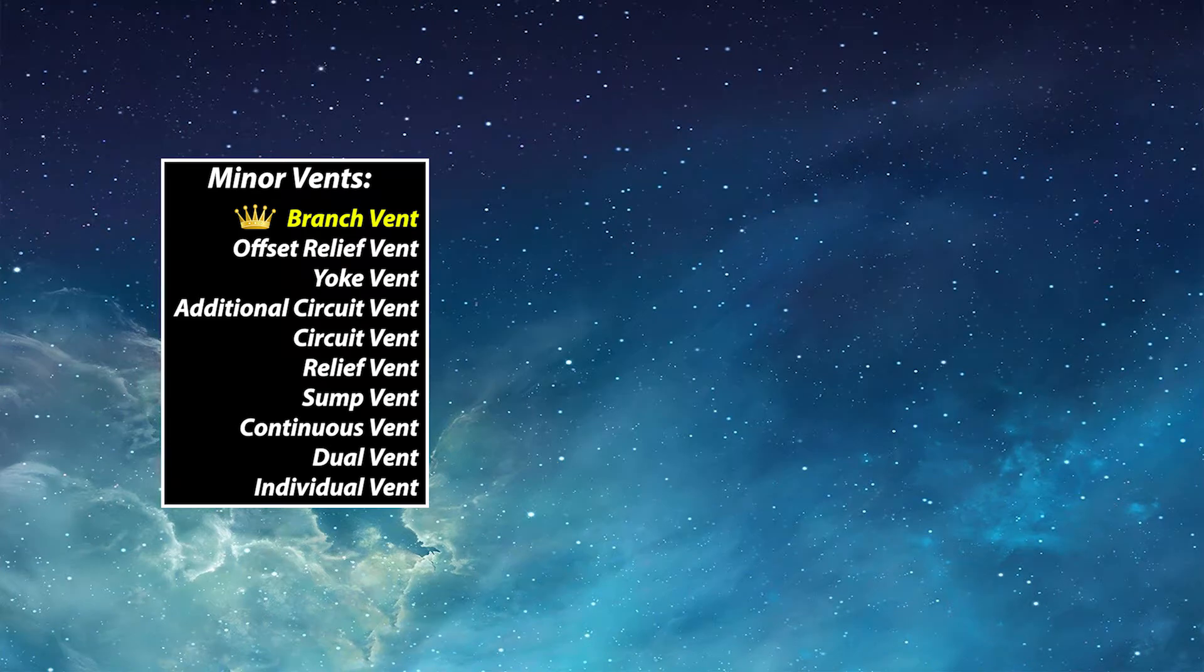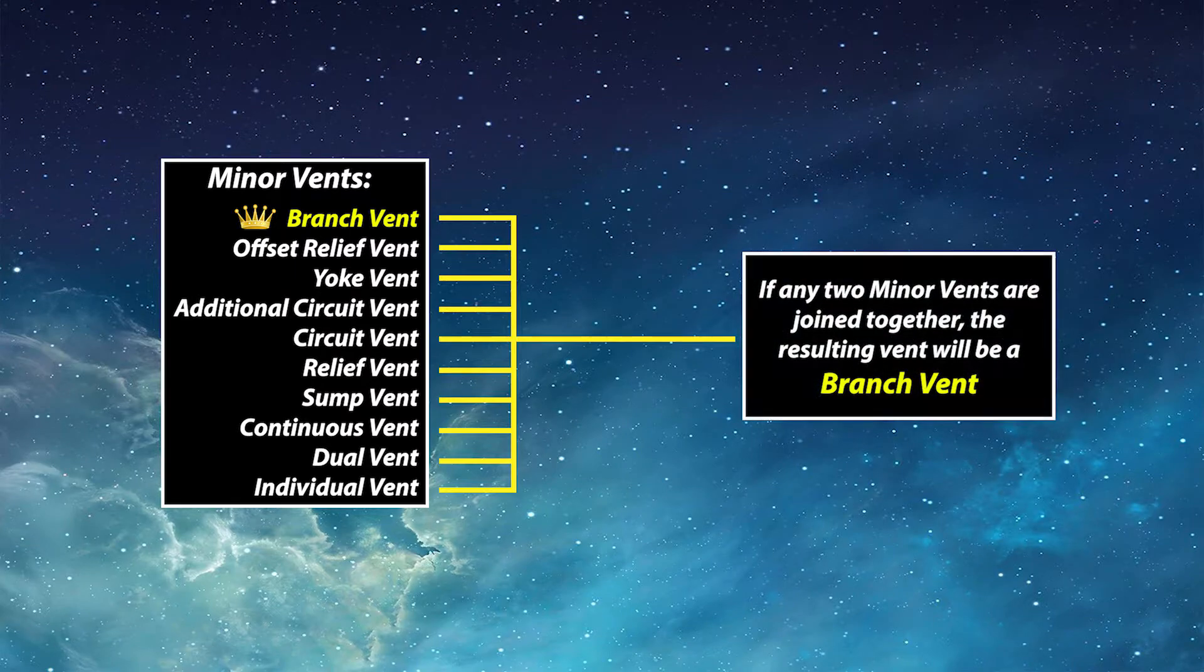Here is a list of minor vents. If you have not come across all of these, you will throughout your apprenticeship. Now notice how I've put a crown beside branch vent at the top of the minor vents list. That is because it's the highest ranking minor vent. When any minor vent joins together, it becomes a branch vent, including joining two branch vents together.